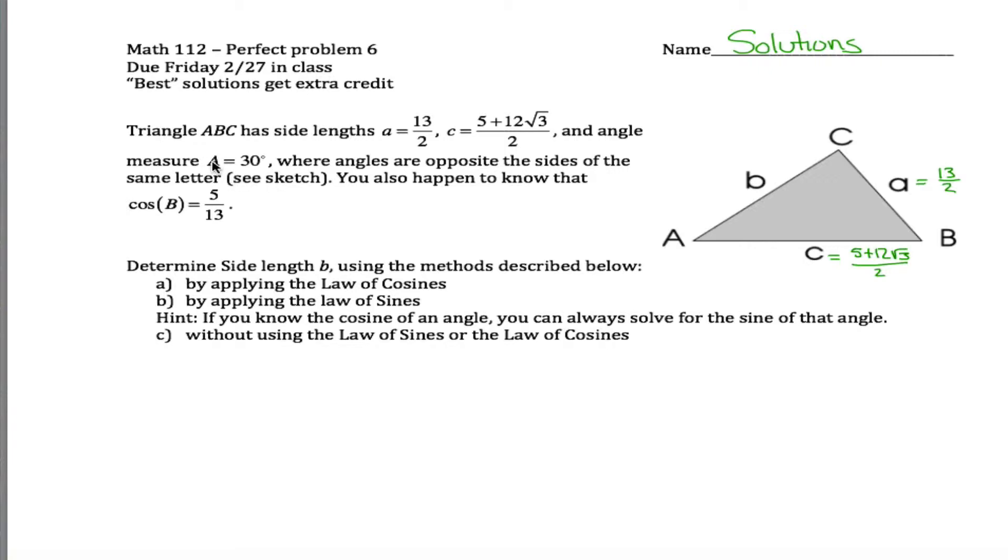Angle measure A equals 30 degrees. That's saying that this right here is 30 degrees. And that's all the information you're given except that the cosine of B is 5 thirteenths. So you don't know what angle this is right here, but you do know its cosine is 5 thirteenths. And what we're trying to figure out is little b.